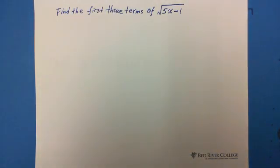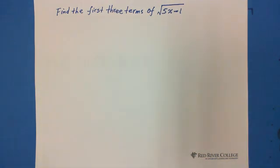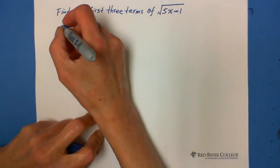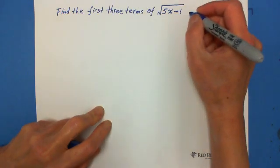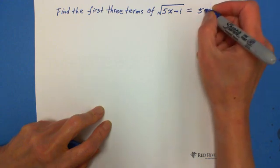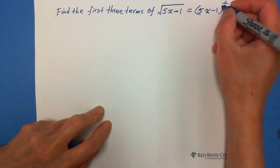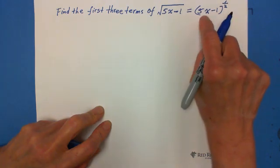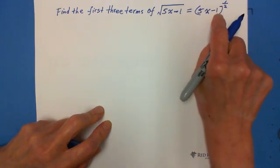Find the first three terms of square root of (5x minus 1). We can write this as 5x minus 1 to the exponent 1 over 2. The first term is 5x, the second term is negative 1.